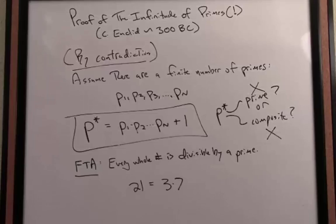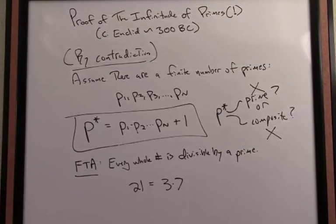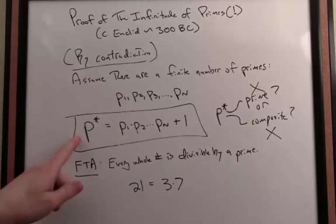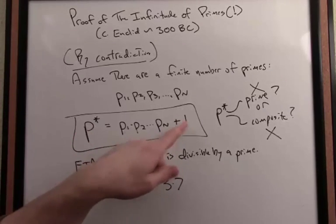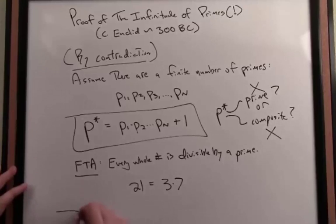But it also can't be composite, because by the Fundamental Theorem of Arithmetic or prime factorization, every whole number, P* is a whole number, is divisible by a prime. And P* gives you remainder 1 whenever I divide it by a prime. So we've produced a number that's neither prime nor composite. That is a contradiction.